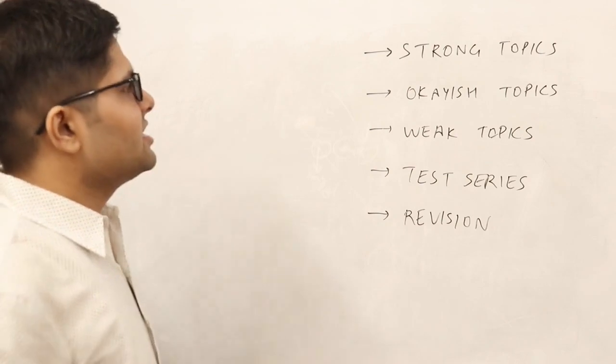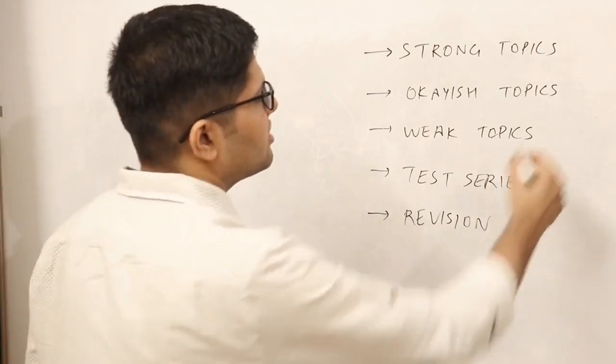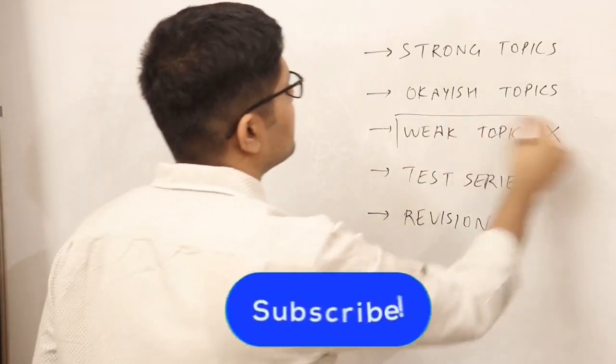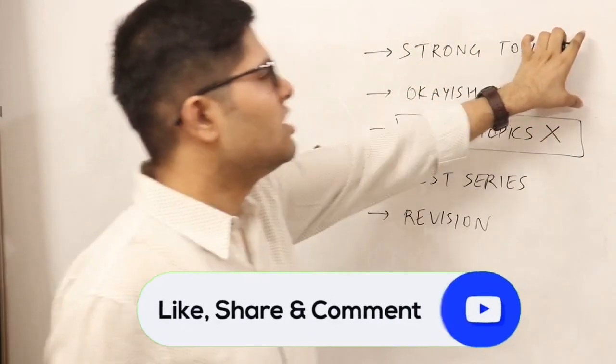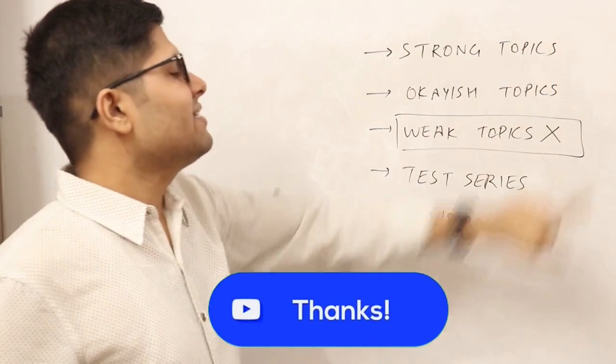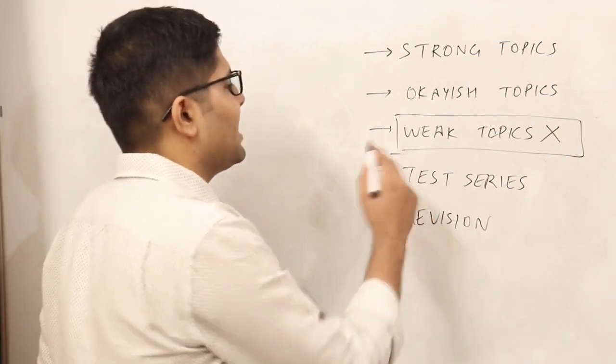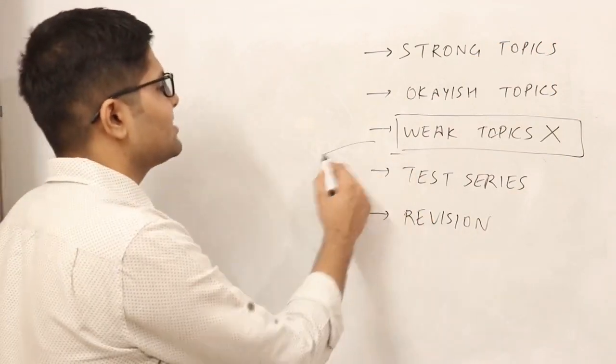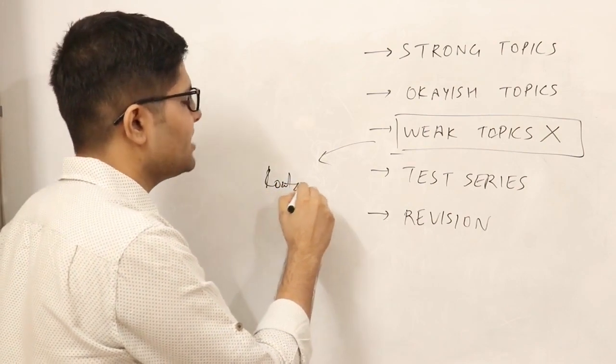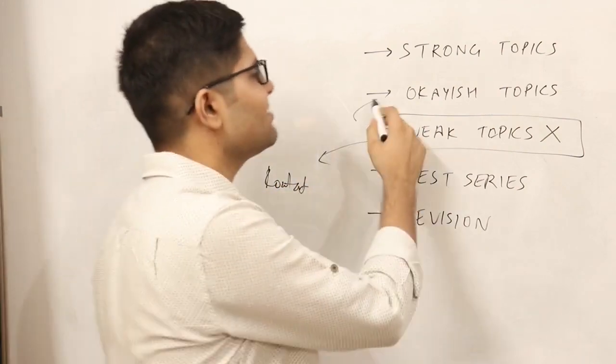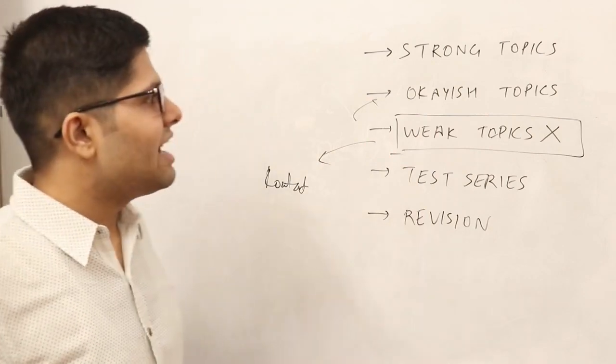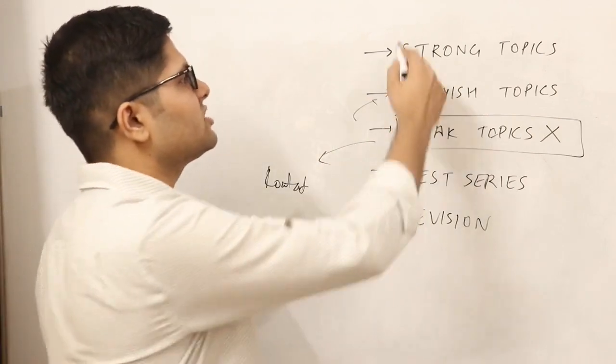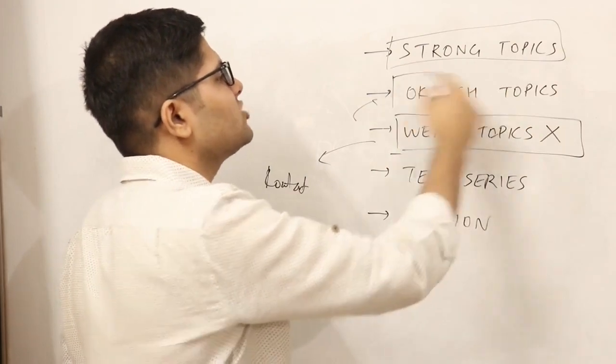So my suggestion is, for now, ignore all these weak topics. You should focus only on strong and okish topics. Why? Because it is not going to be like you have to start a weak topic today. Like let's say you start studying rotation from today - do you think you can complete this even till okish level in even one or two weeks? You cannot do that. So I would suggest it is much better that you strengthen your already strong or your okish topics.